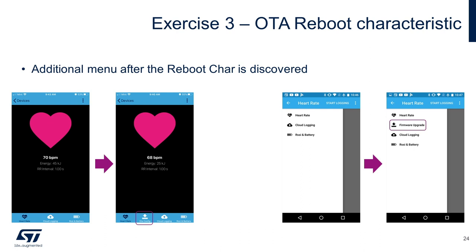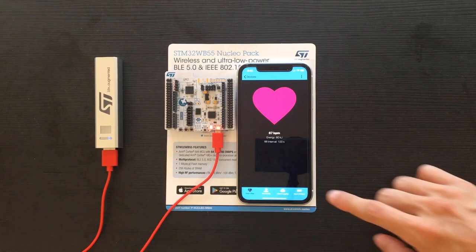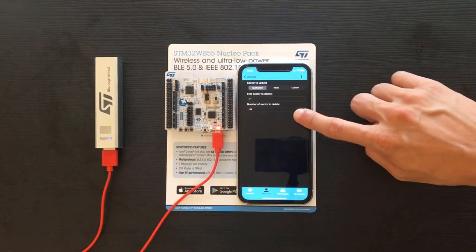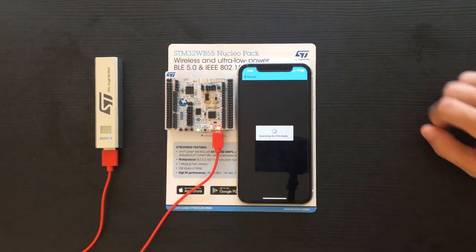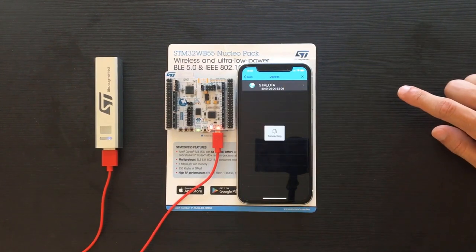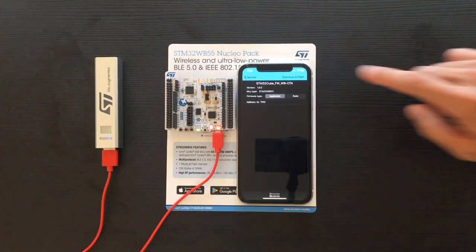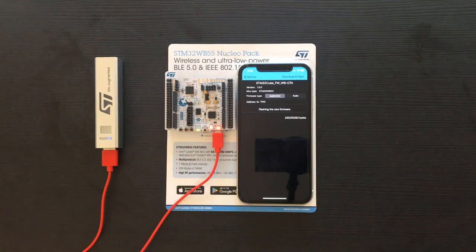So what is this OTA reboot characteristic? The reboot characteristic is used for the user application to jump to the OTA loader. Both the heart rate OTA example and the P2P server OTA example have this reboot characteristic included. If the reboot characteristic is available on the user application side, the STBLE sensor app can discover it and provide an additional menu to run the OTA loader. Then let's use that menu to replace the heart rate example with a P2P server example. Press the OTA config menu on the bottom. Using the OTA reboot characteristic, the user application reboots and runs the OTA loader. The OTA loader has deleted the existing heart rate OTA example and is now advertising so the mobile app can connect to transfer a different firmware image.